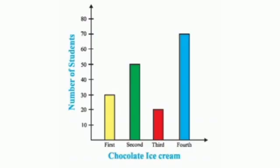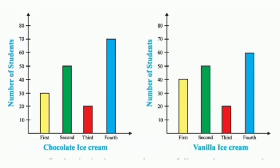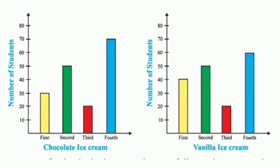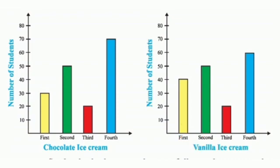We have learned to study pictograph and bar graph. Now we shall learn to conclude the results of two bar graphs. There are two bar graphs which show the number of students from first to fourth class who liked chocolate and vanilla ice cream. Which flavor is mostly liked by first class students? In the first bar graph, 30 students of first class liked chocolate ice cream, and in the second bar graph, 40 students liked vanilla ice cream. So, vanilla flavored ice cream is mostly liked by first class students.